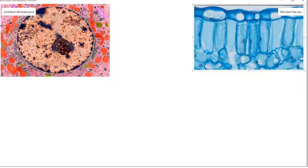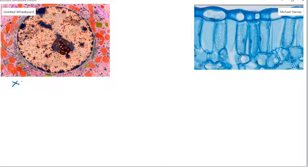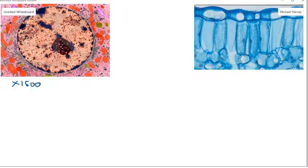So this liver cell has been magnified up about 1500 times. This palisade cell has been magnified up around about 500 times. The question is, how do we work out the actual size of these objects?